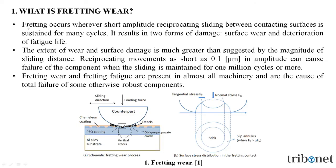What is fretting wear? Fretting wear occurs wherever short amplitude reciprocating sliding between contacting surfaces is sustained for many cycles. It results in two forms of damage: surface wear and deterioration of fatigue life. The extent of wear and surface damage is much greater than suggested by the magnitude of sliding distance. Reciprocating motions as short as 0.1 micrometer in amplitude can cause failure of the components when the sliding is maintained for one million cycles or more. Fretting wear and fretting fatigue are present in almost all machinery and are the cause of total failure of some otherwise robust components.